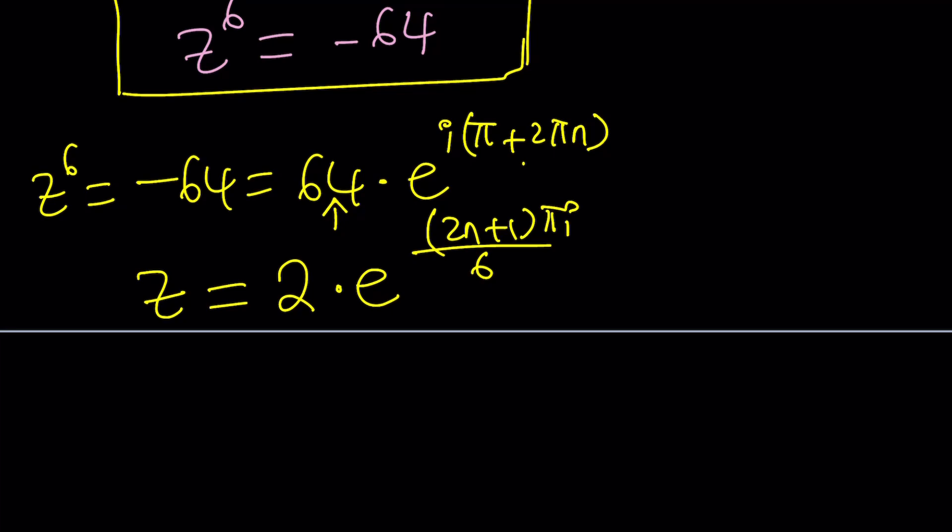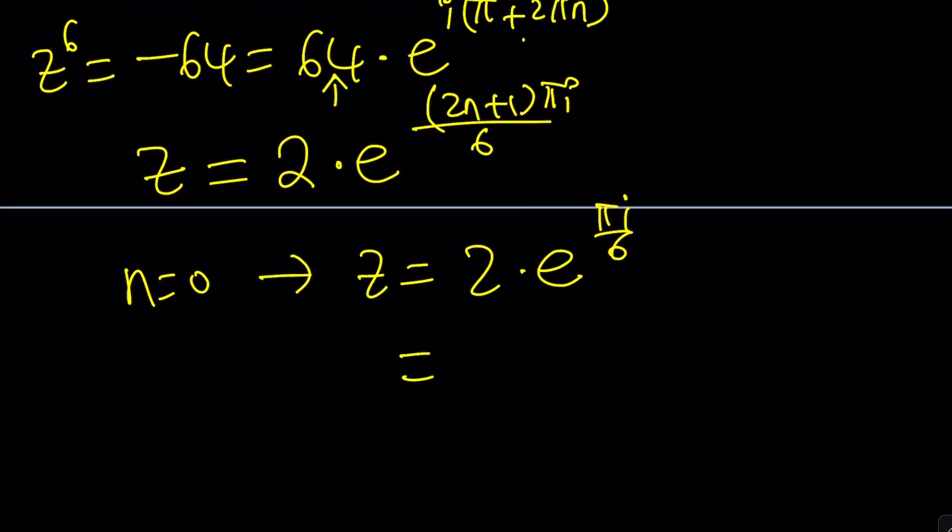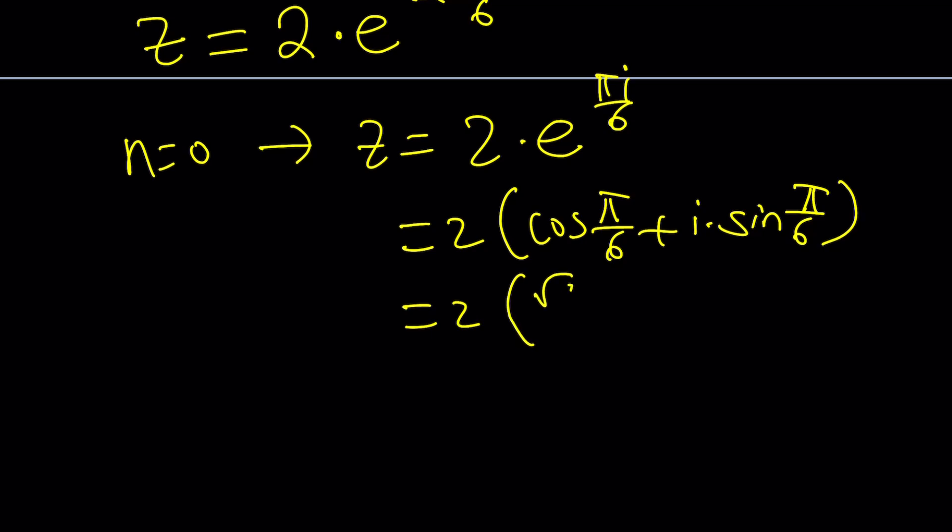I should probably put the i at the end, which looks a little better, and here we go. So, that's my z, which are the sixth roots of negative 64. There's six of them. And you're going to replace n with certain values. For example, what happens if n is equal to 0? Then we get something like z equals 2 times e to the power 0 plus 1 pi i over 6. Pi over 6 is 30 degrees. So, we're going to turn this into 2 times cosine pi over 6 plus i times sine pi over 6. And we know these values. This is root 3 over 2, and this is 1 over 2. So, from here, z becomes what? Root 3 plus i. That's just one of the solutions. Of course, there should be more. There should actually be six solutions.